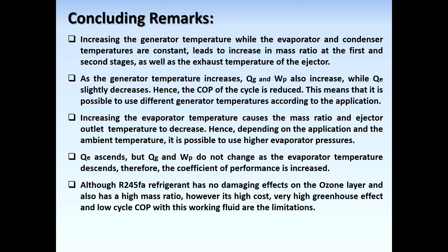In summary, increasing the generator temperature while evaporator and condenser temperatures are constant reduces the COP of the cycle. This means it is possible to use different generator temperatures according to the application. Increasing the evaporator temperature causes the mass ratio and ejector outlet temperature to decrease; depending on the application and ambient temperature, it is possible to use higher evaporator pressures.